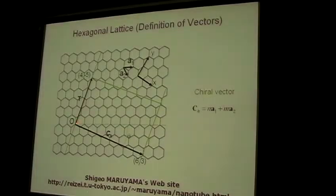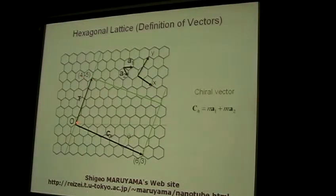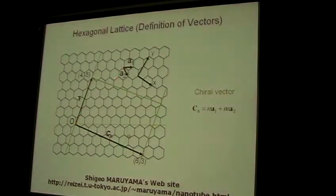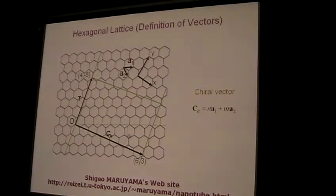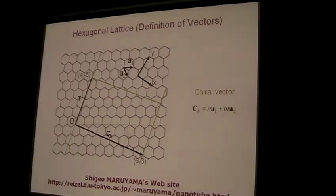For example, this point has a coordinate 4, minus 5: you go minus 5 in this direction and 4 in this direction, and you end up here. And you can define another point, 6-3. So you can define points in the hexagonal lattice of a graphene sheet.